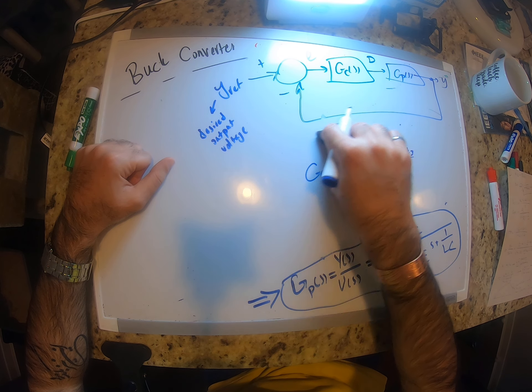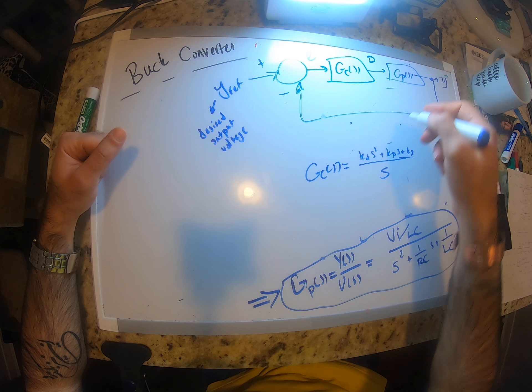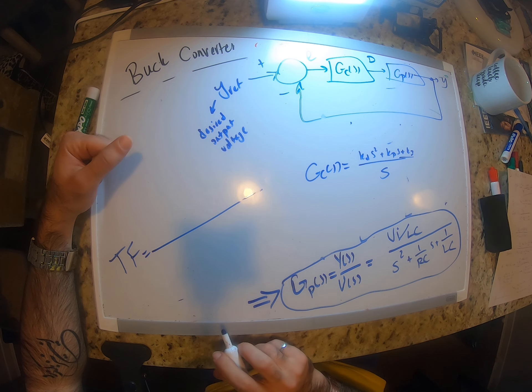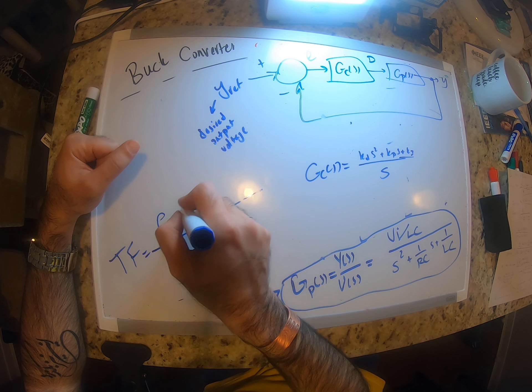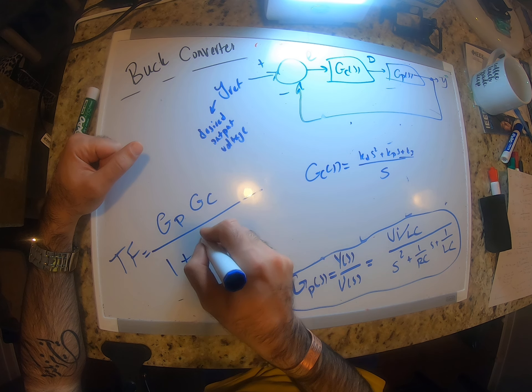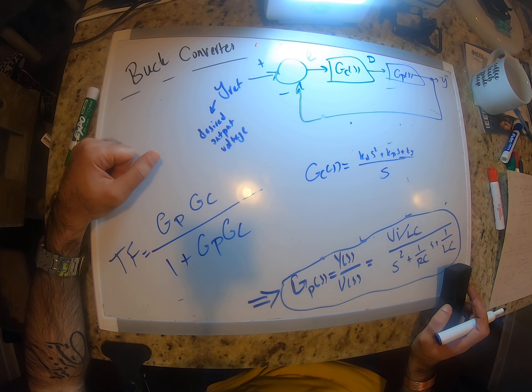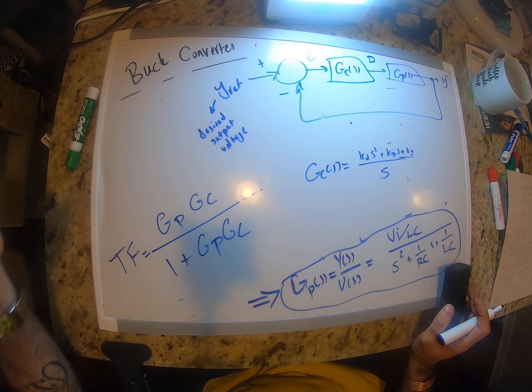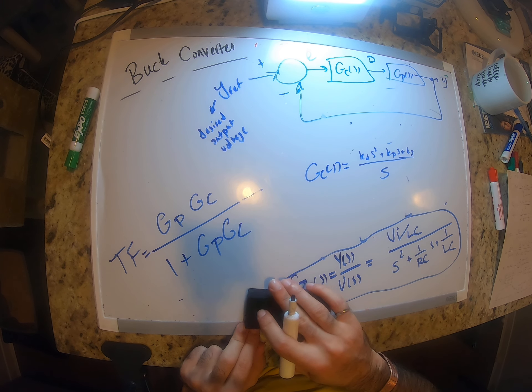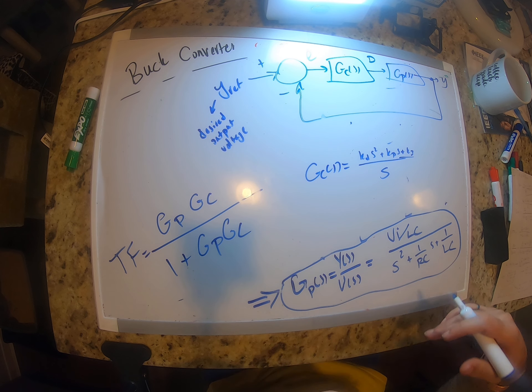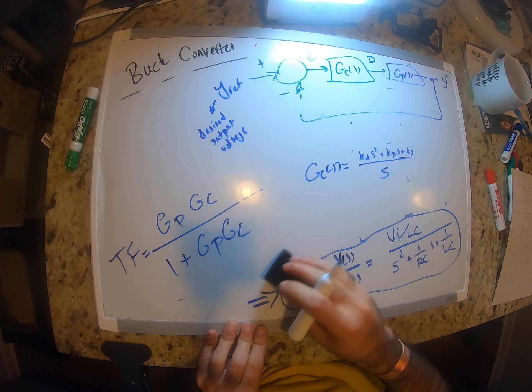Okay, so if you want to find the transfer function of the whole system, how can we find that? It's basically Gp times Gc over 1 plus Gp Gc. I'm going to just write down the final value. I'm basically going to multiply these two together, and you have to simplify that. I'm just going to write down the final answer.